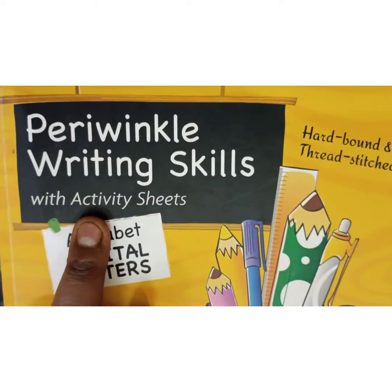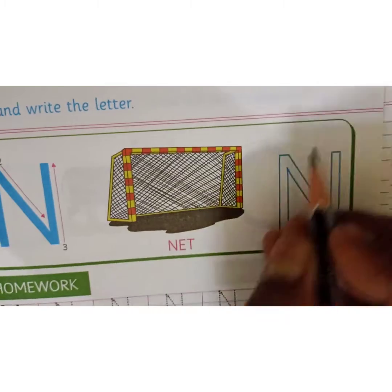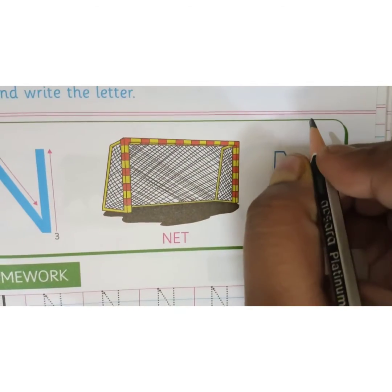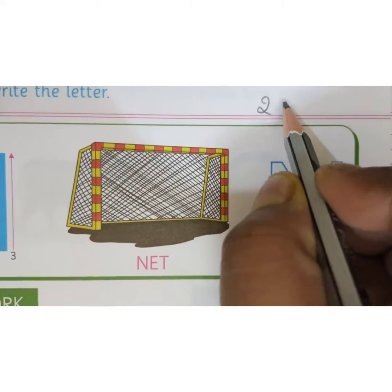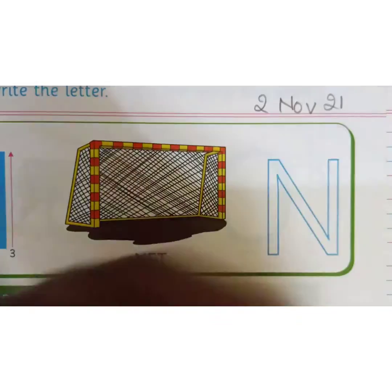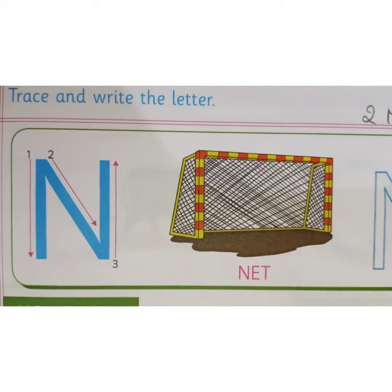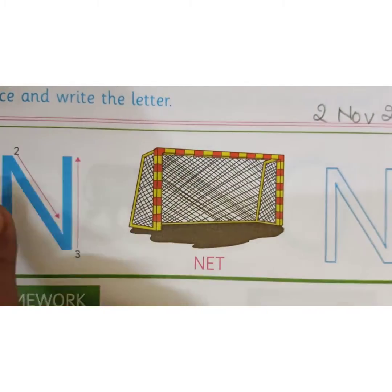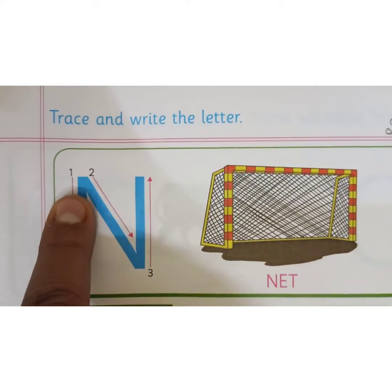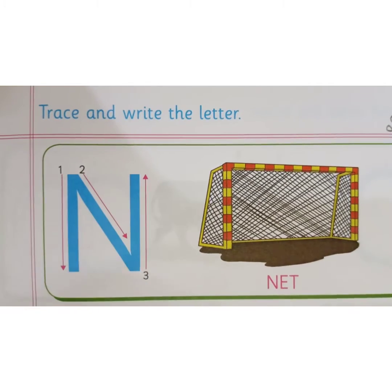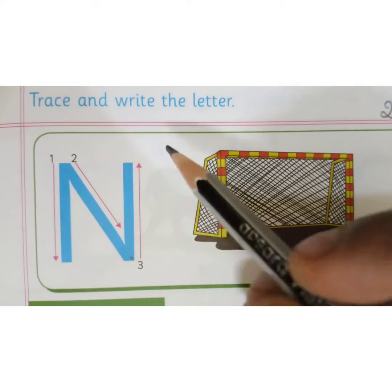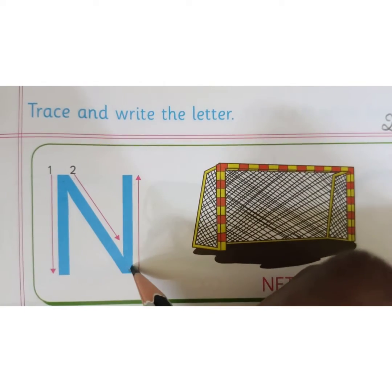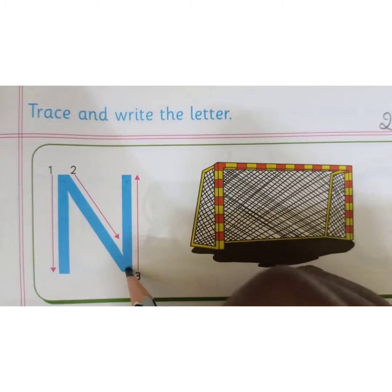Take out your book — Writing Skills — and go to page number 48. Now write the date. So what is the date today? Write the date with me: 2nd of November 2021. Yes, the new month is there. N for net. First step is top to bottom, the standing line. Second step is slanting line, right to left. Then again a standing line, top to bottom.